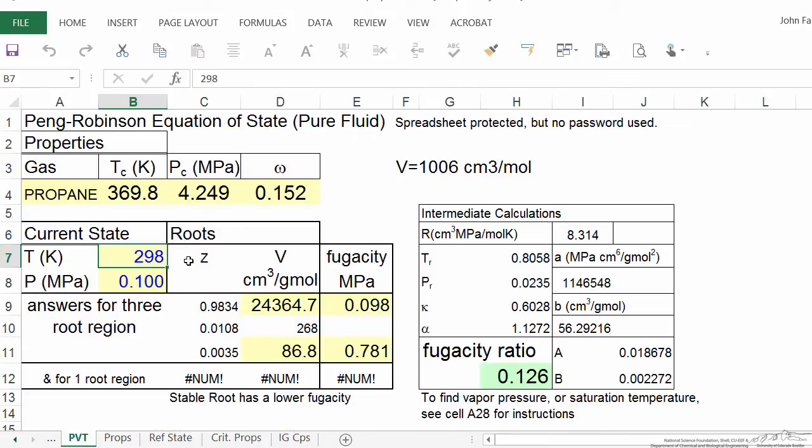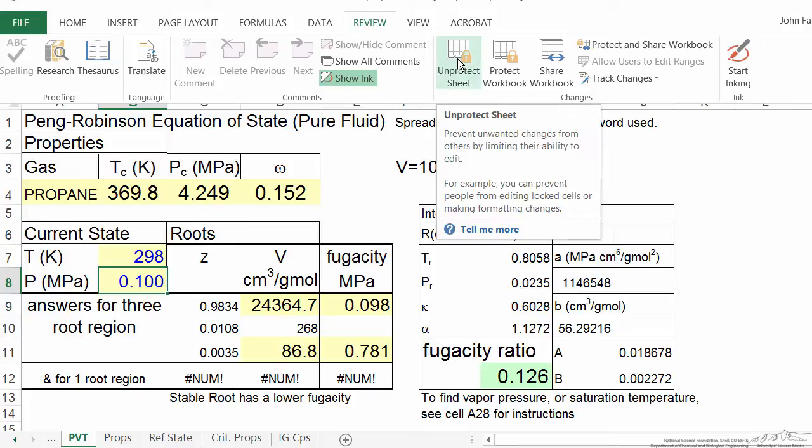I put in the temperature of our system and guessed the pressure. The spreadsheet is set up to enter pressure and temperature and calculate volume. Since we're given the volume, we have to work differently. One other thing I need to do is go to review and unprotect the spreadsheet, which allows me to change cells that are otherwise restricted.